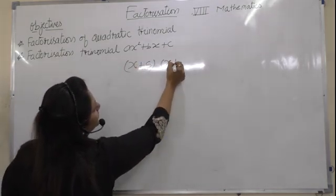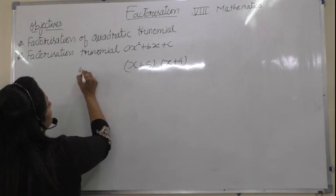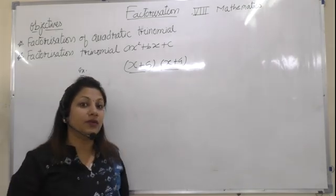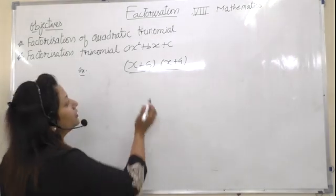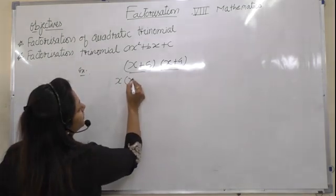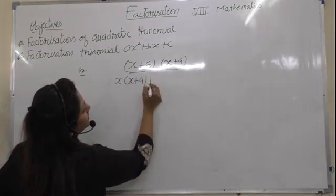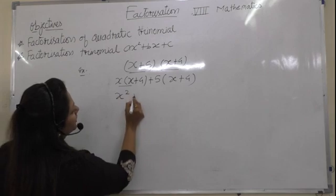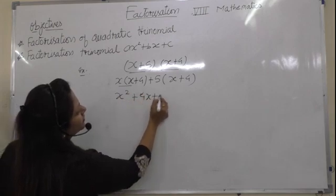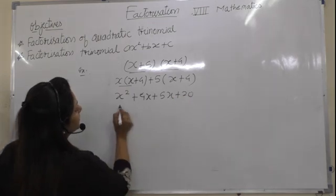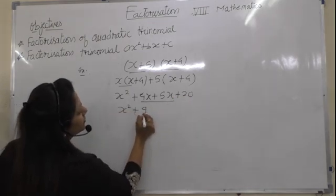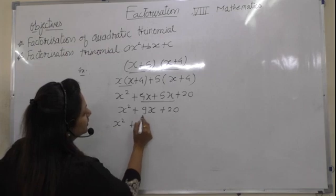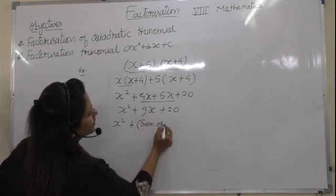For example, x plus 5 and x plus 4 are two factors of an algebraic expression. We find the algebraic expression through multiplication: x plus 5 multiplied by x plus 4 gives us x squared, plus 4x, plus 5x, plus 20.